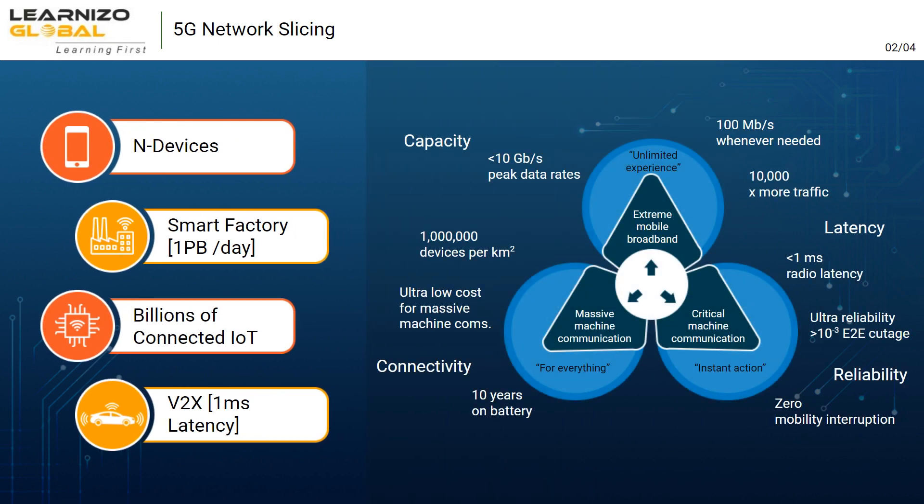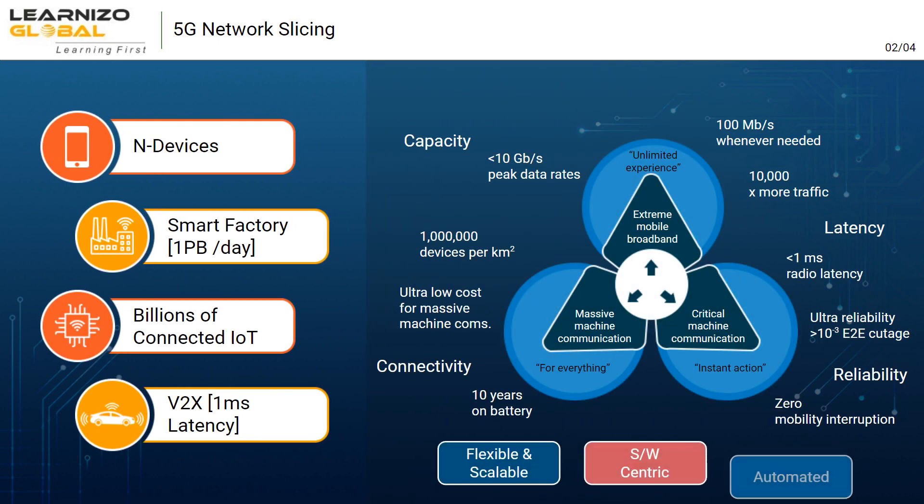eMBB requires very high data rates up to 20 Gbps in downlink. MMTC requires millions of simultaneously connected devices, whereas URLLC requires very low latency of less than 1 millisecond and very high reliability of up to 99.99%.